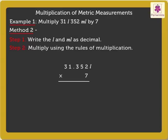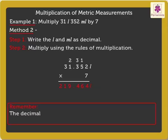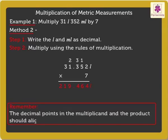Thus, on multiplying, we get 219.464 litres. Kids, remember, the decimal points in the multiplicand and the product should align.